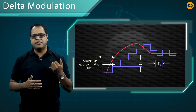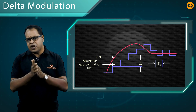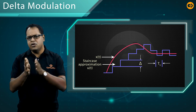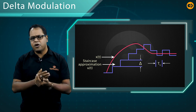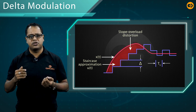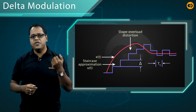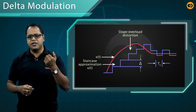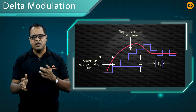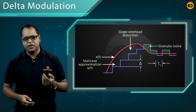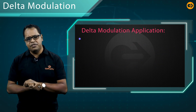Now let us discuss the disadvantages of delta modulation. If the signal slope is high, the sampled signal can't follow the message signal properly — this problem is known as slope overload distortion. The reverse is also true: if the sampled signal slope is high and the message signal can't follow the sampled signal, it is known as granular noise.